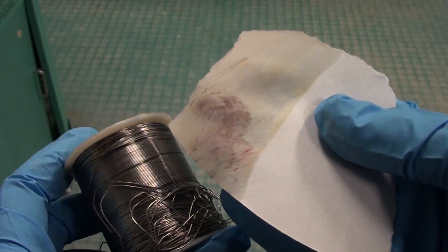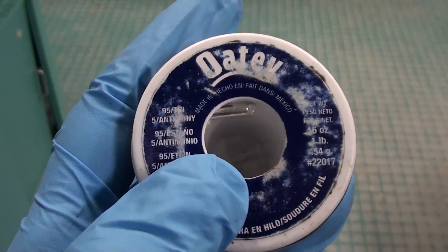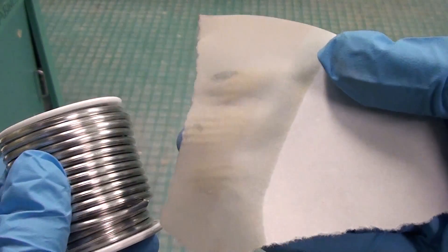Now let's try this lead free solder which is 95% tin and 5% antimony. Rubbing the test paper we can see no trace of lead, as expected from a lead free solder.